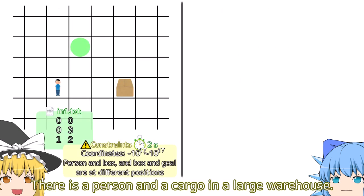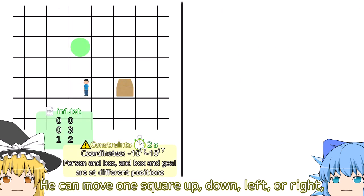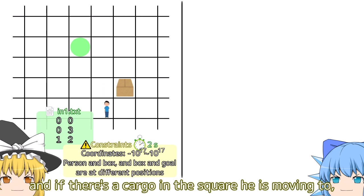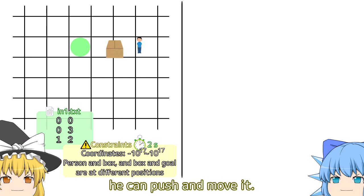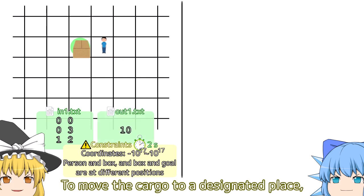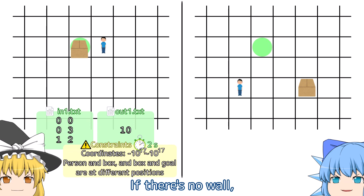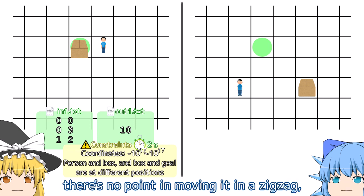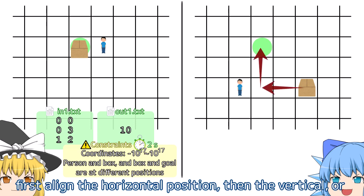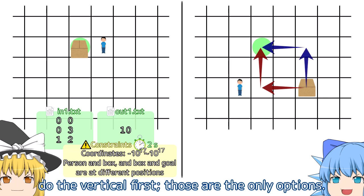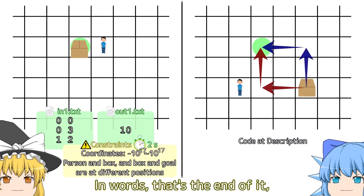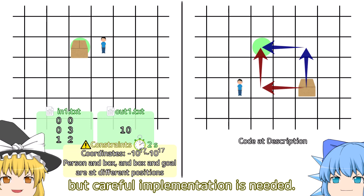Problem F. If there is a person with cargo in a large warehouse, he can move one square up, down, left, or right. If there's cargo in the square he is moving to, he can push and move it. To move the cargo to a designated place, how many moves does it take at least? If there's no wall, there's no point in moving in a zigzag — first align the horizontal position, then the vertical, or do the vertical first. Those are the only options. In words, that's the end of it, but careful implementation is needed.